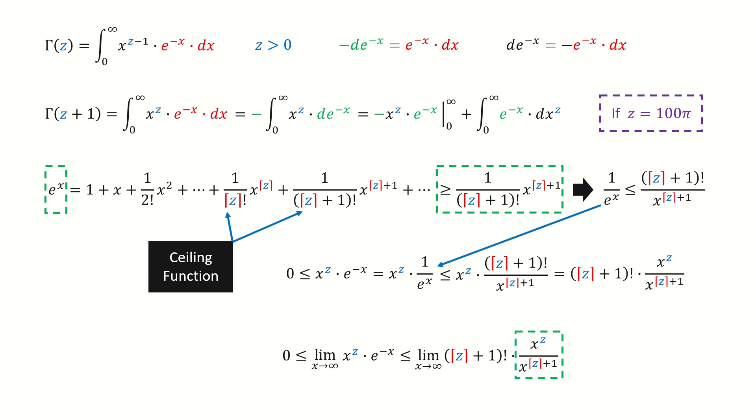Because the power index for the denominator is greater than the numerator, the limit is 0. So by using the squeeze theorem, the limit for this term is 0. Therefore, this term vanish for any positive value of z.